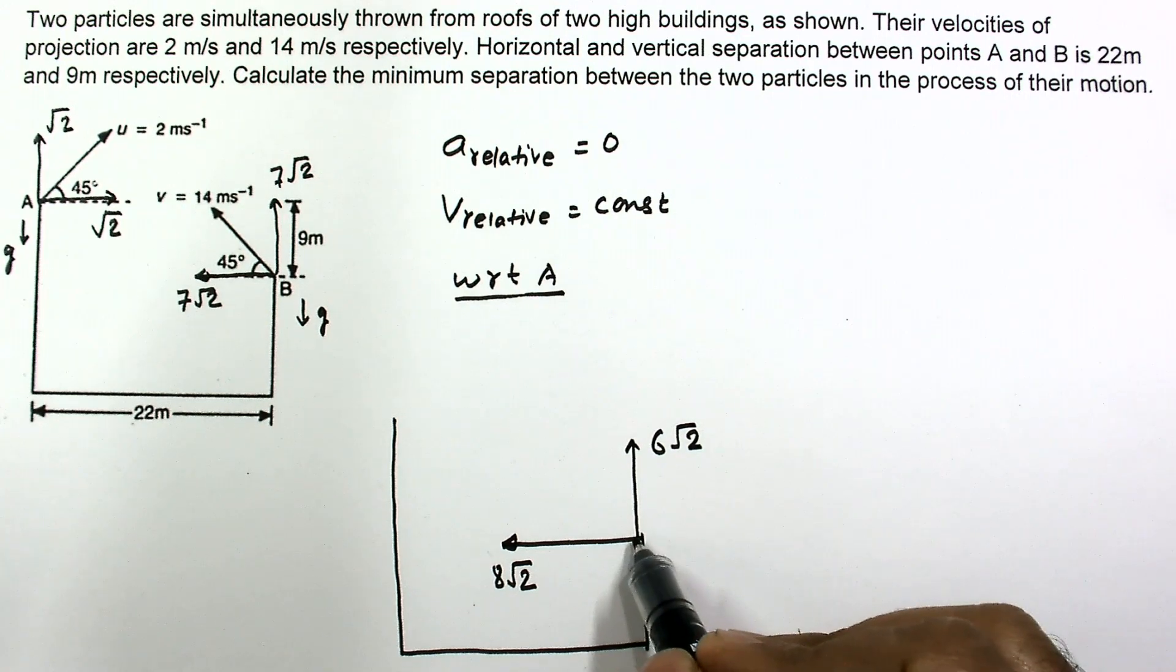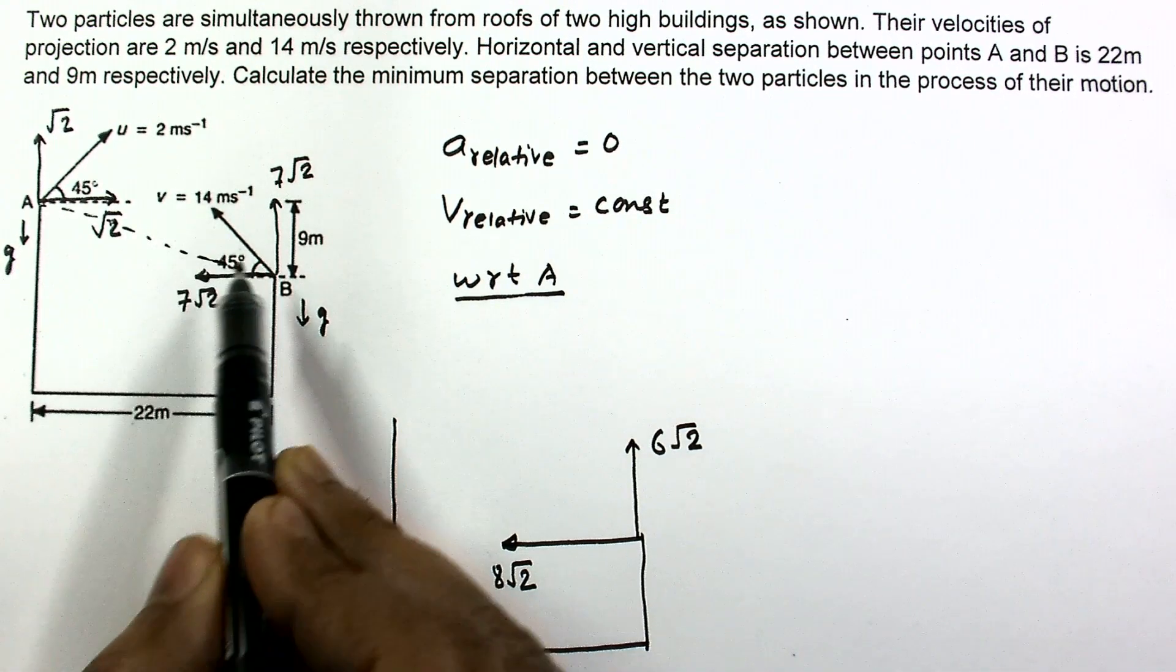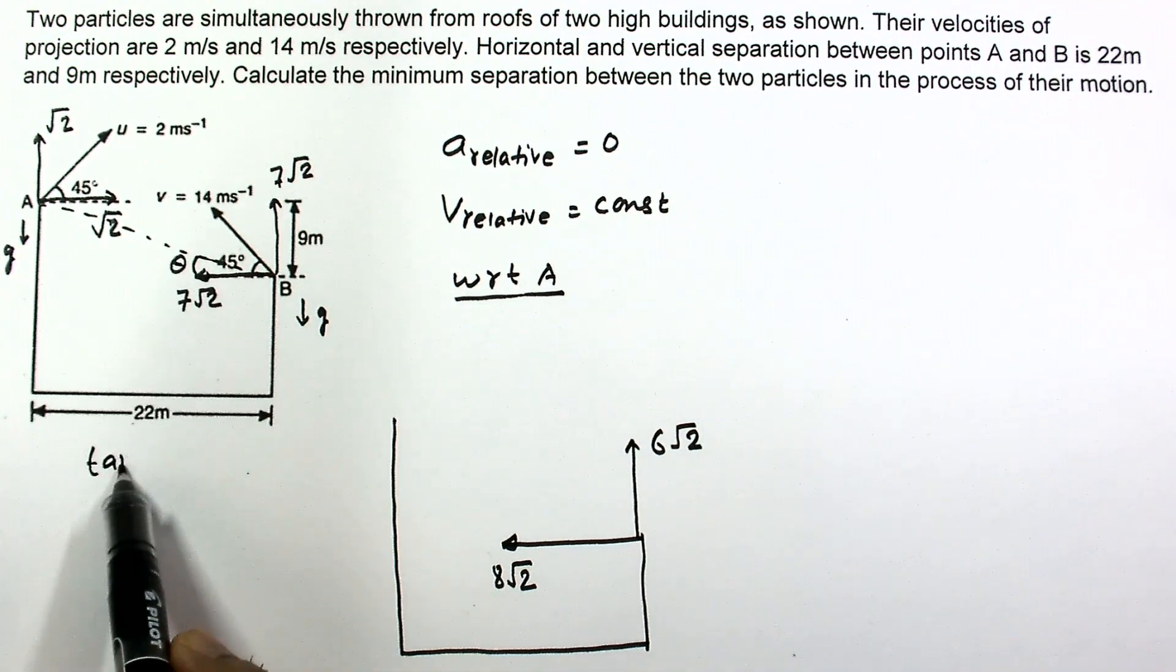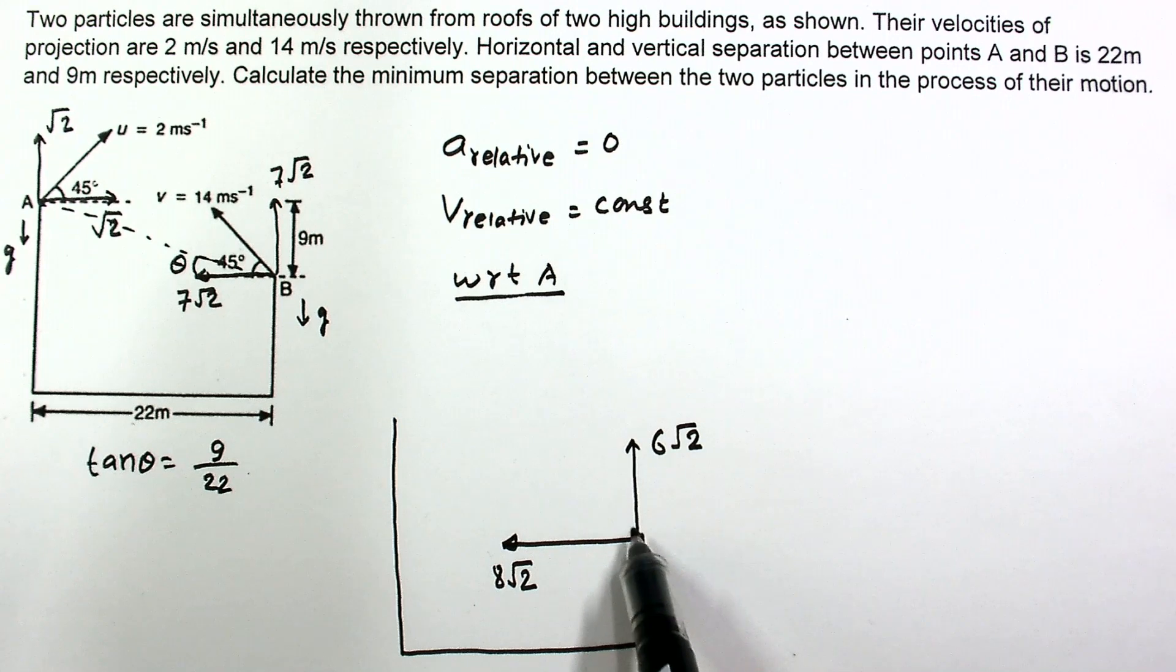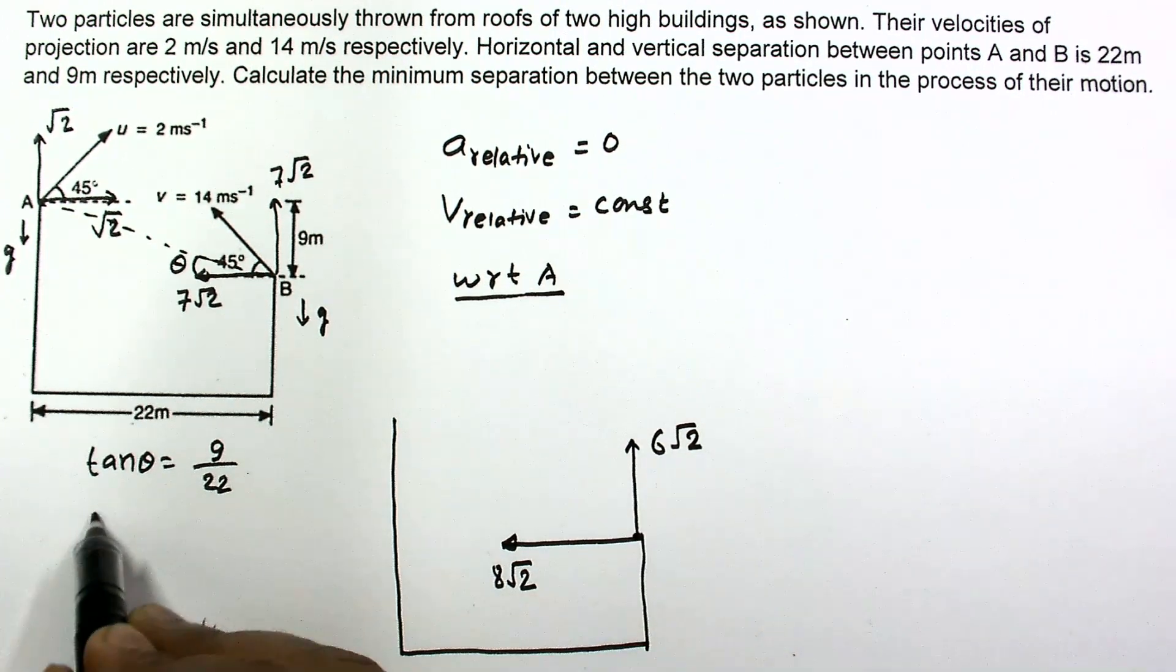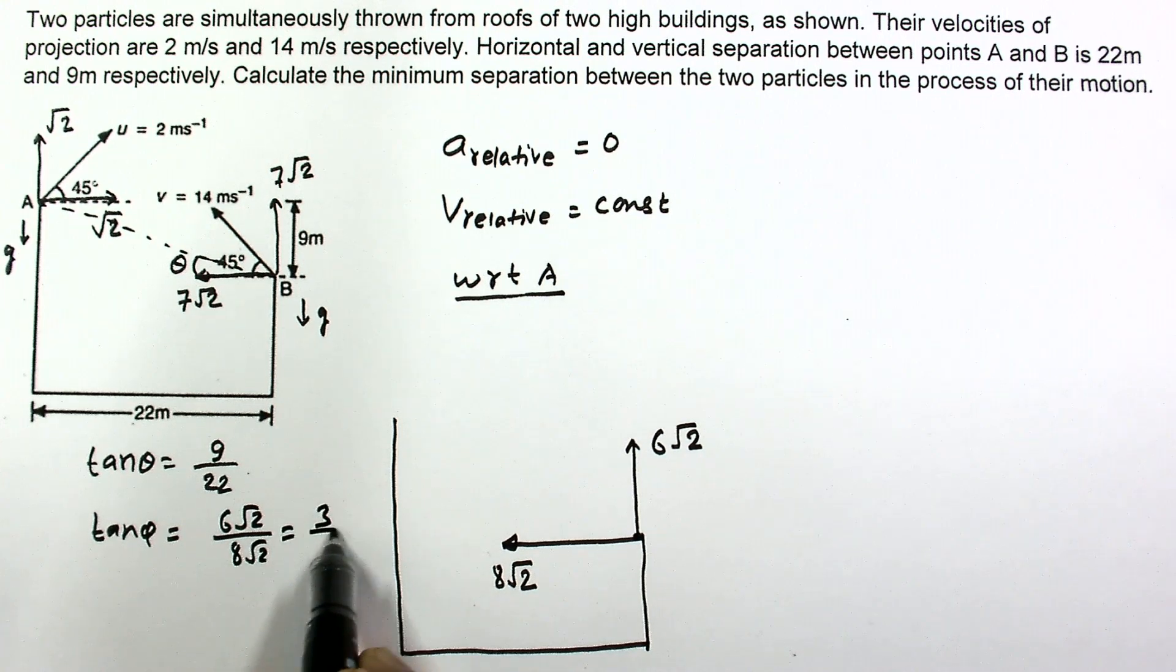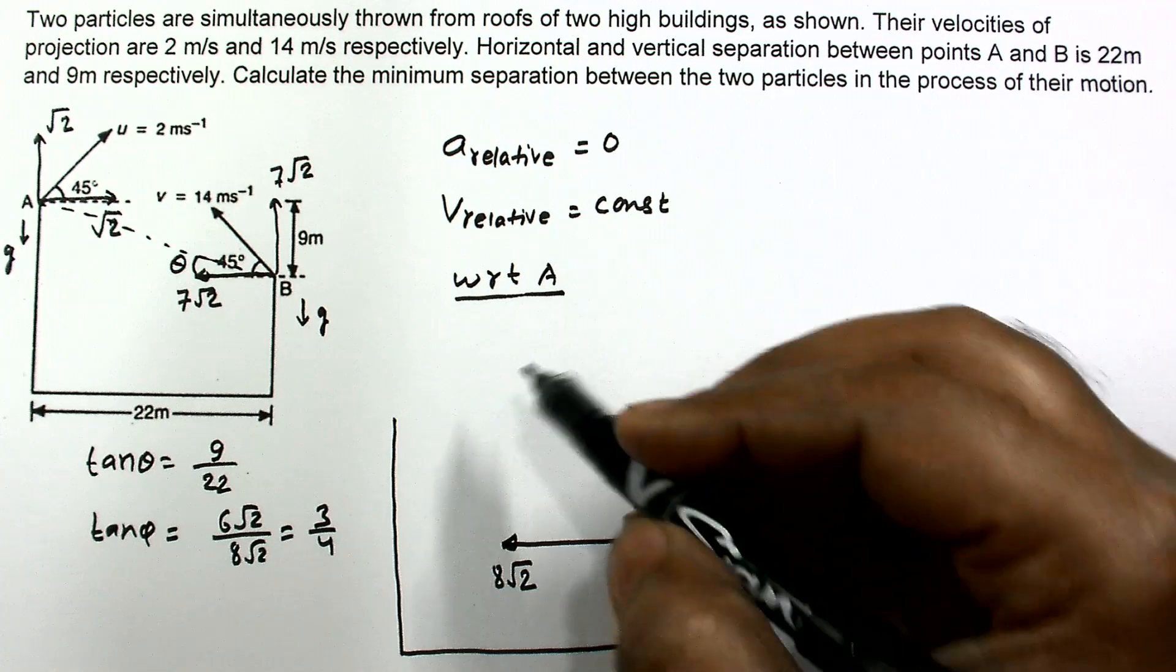Net velocity of B with respect to A will be something like this. Initially if you join A and B, then this angle is some theta, and here tan theta is 9 by 22. Now the direction of motion: if this angle is phi, then tan phi is 6 root 2 divided by 8 root 2, which is 3 by 4. So basically phi is greater than theta.